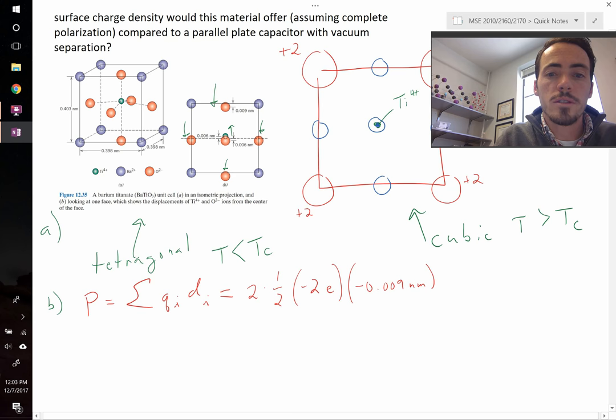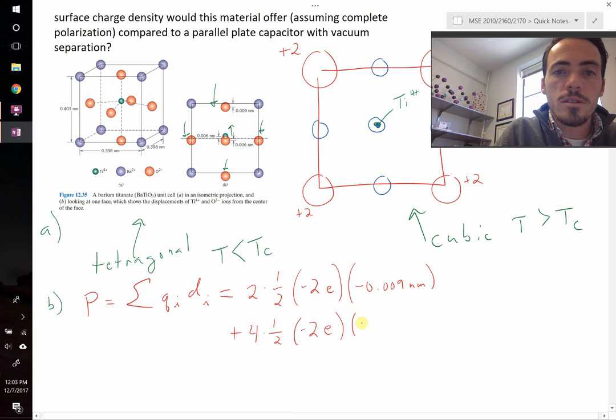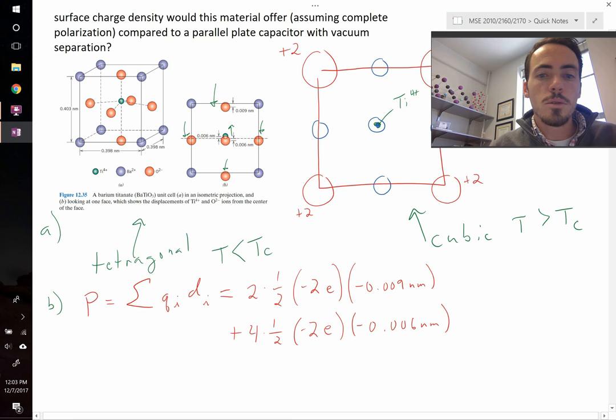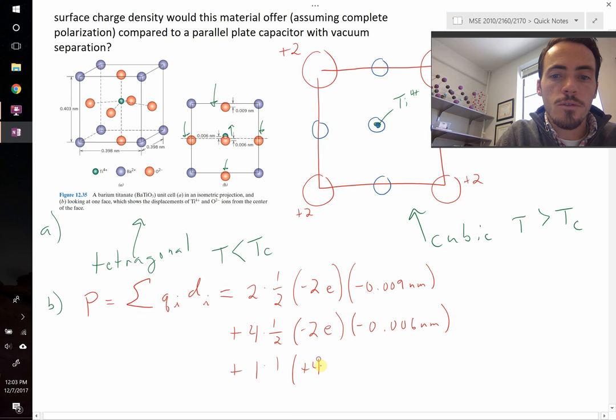So that's the contribution from the top and bottom oxygens. Now let's do the other oxygens. There's now 1, 2, 3, 4 of these things on the sides and the front and back. They're also one half in and one half out, so it's 4 times a half. They have the same charge, minus 2 charge of an electron. But these are only shifted down by a negative 0.006, at least in this drawing that we've been given, negative 0.006 nanometers. And lastly, we need to account for the titanium, so let's add that term. This one, there's only one titanium atom per unit cell, so it's going to be 1. It's completely inside, so just 1 times 1. This is a plus 4 titanium ion, so it's going to be positive 4 fundamental charge multiplied by its shifting upwards, so it's going to be a positive 0.006 nanometers.